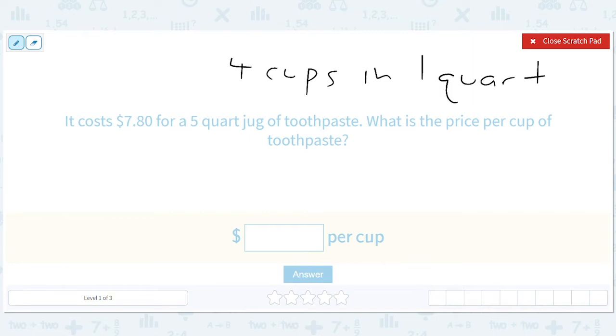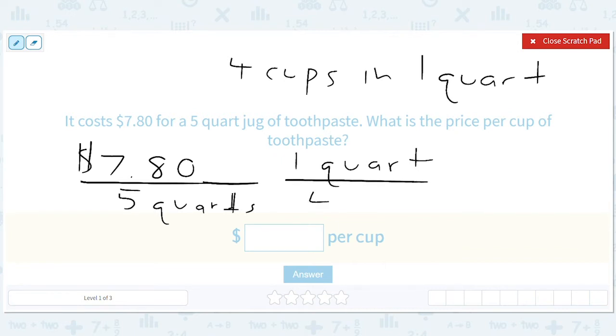So what will that give us? We have $7.80 divided by five quarts. But then we can multiply by, we want to put quarts on top so they cancel, right? So one quart divided by four cups. So what we want to do is do 7.80 divided by 20. And that will be the price because five times four is 20.